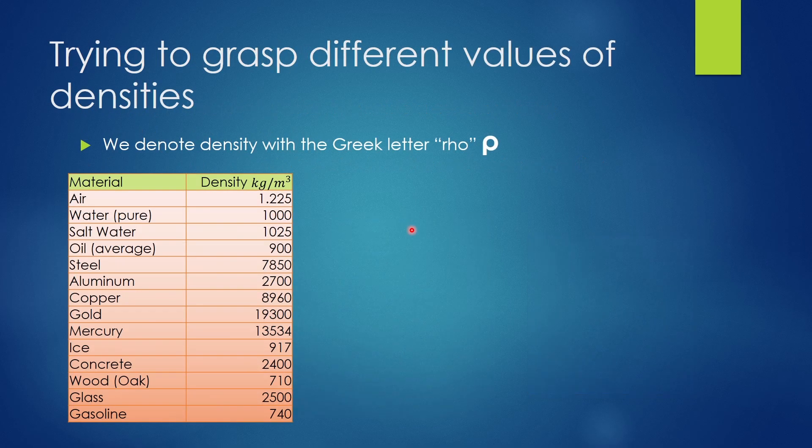To better understand the values of densities, here we have a table of different material densities. We denote density with the lowercase Greek letter rho (ρ). If we observe a cube full of air, and for example this cube again is one meter tall, one meter deep, and one meter wide, and we fill it with air at atmospheric pressure, the mass of the air inside of this cube would be 1.225 kilograms.